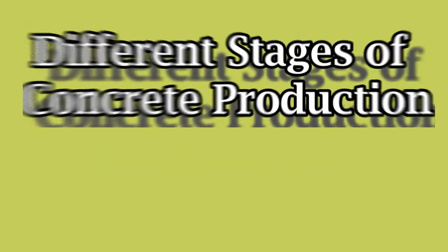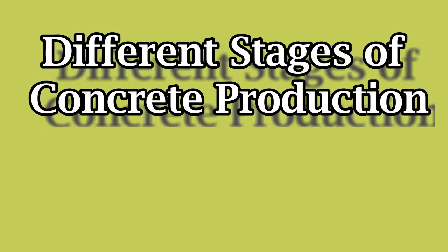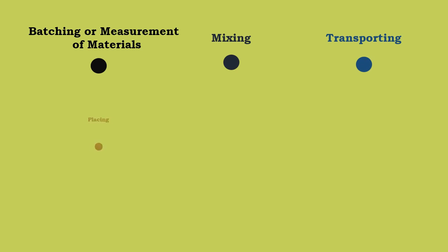In this video let's have a look at the different stages of concrete production. The different stages involved in the production of concrete are batching or measurement of materials, mixing, transporting, placing, compacting, curing and finishing.